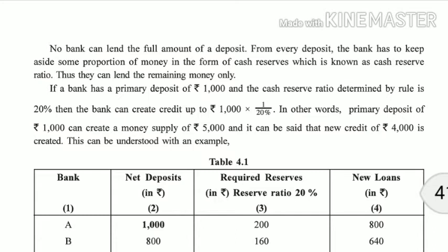No bank can lend the full amount of a deposit. From every deposit, the bank has to keep aside some proportion of money in the form of cash reserves, known as the cash reserve ratio. The remaining money can then be lent. For example, if a bank has a primary deposit of Rs. 1000 and the cash reserve ratio is 20%, then the bank can create credit up to 1000 × (1/20%) = 5000. So a primary deposit of Rs. 1000 can create a money supply of Rs. 5000, and new credit of Rs. 4000 is created.